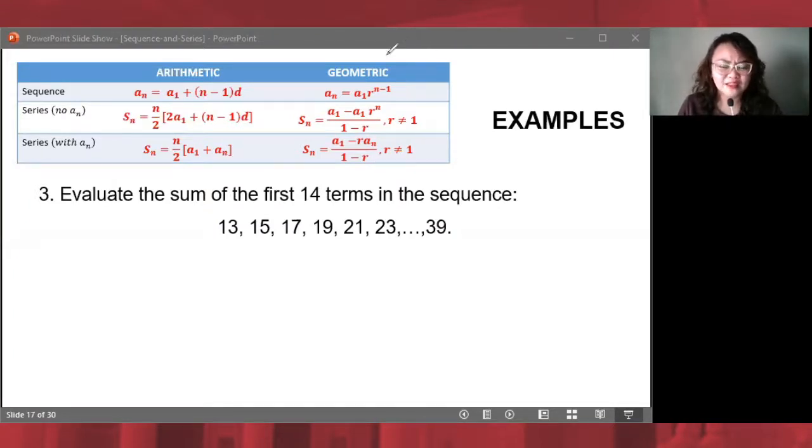Since we are evaluating the sum, that means we are looking for a series. Very good. Now, the next step is to identify whether it's arithmetic or geometric. Let's see: 13, how did it become 15? 15 to 17, and so on. What's happening here?